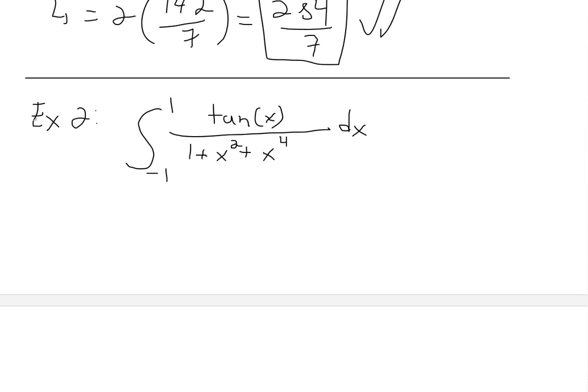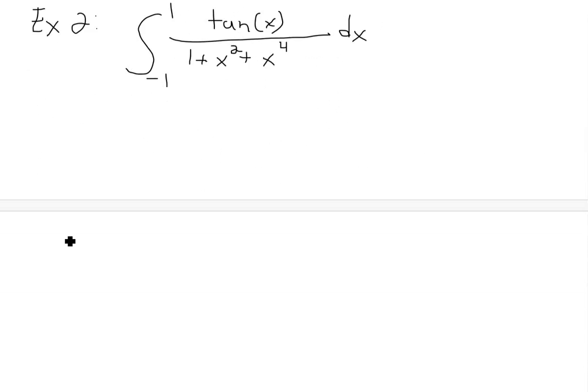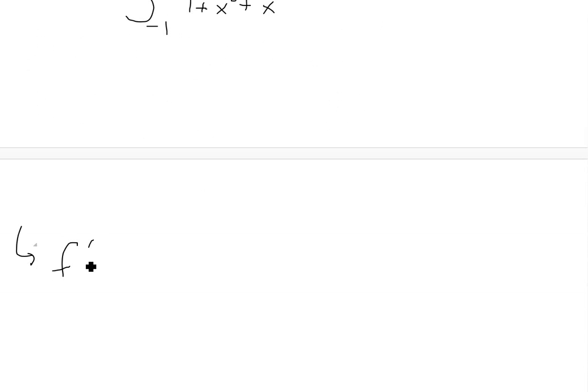The easy way to look at it, if there's even powers everywhere, then those are even. But then this tan of x, like I showed in my last video, this tan of x is an odd function right here. So let's just plug in f of negative x inside.